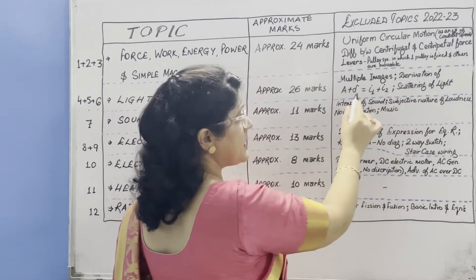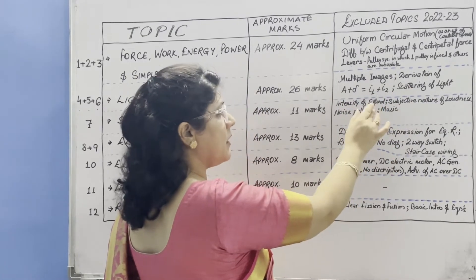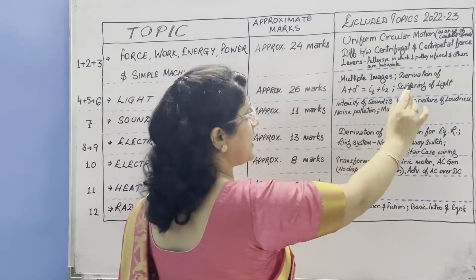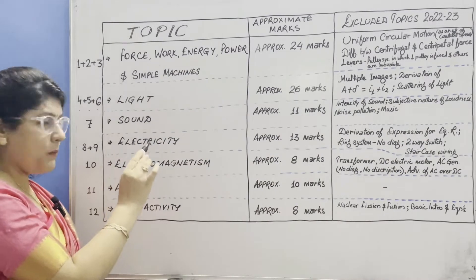Derivation of A plus delta equals i1 plus i2 - this formula is there, numericals are there but derivation is not there, and whole topic of scattering of light.